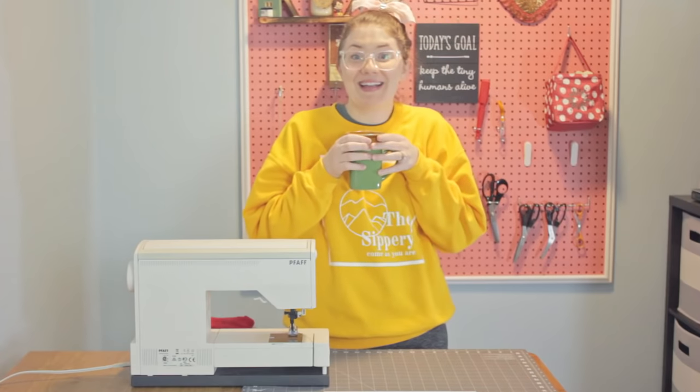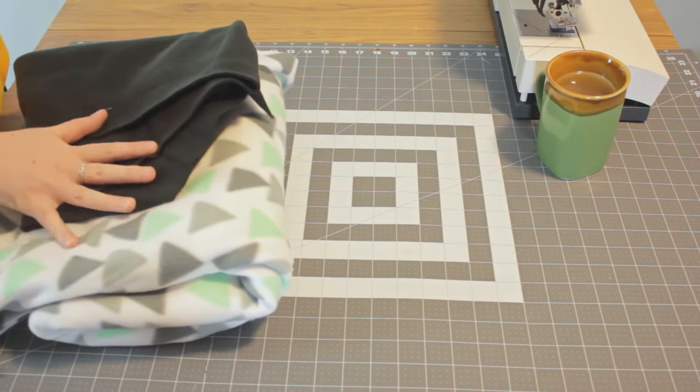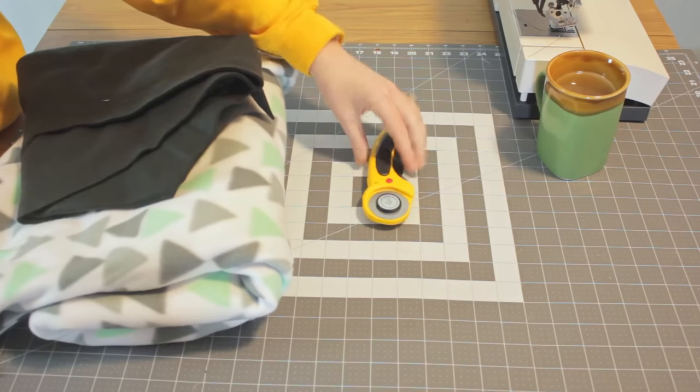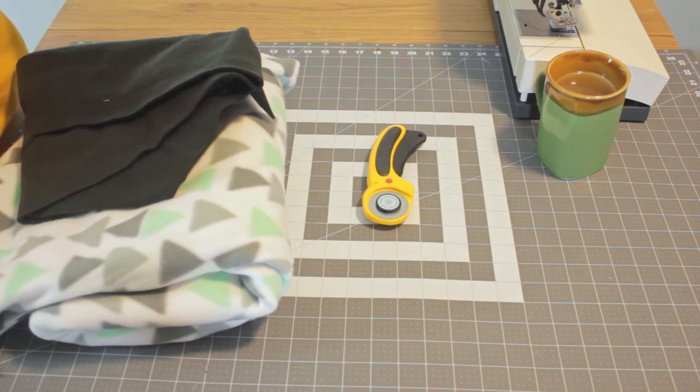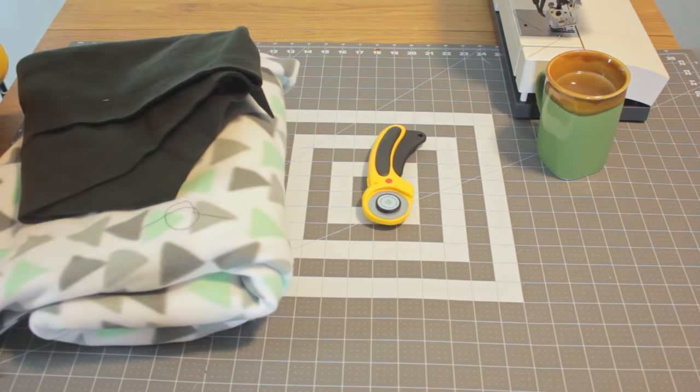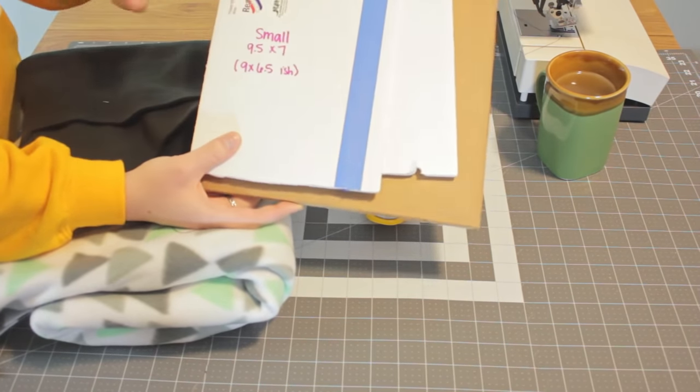Now let's make a snuggle sack. You're going to need fleece. I like to use two different prints so that it can be reversible, but you don't have to if you don't want to. You're going to want a rotary cutter or fabric scissors, but a rotary cutter makes the edges a lot cleaner. And to finish it, we're going to use a hand needle and thread. You'll also want a measuring implement of some kind. Because I make so many of these, I've actually made templates.